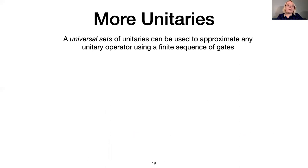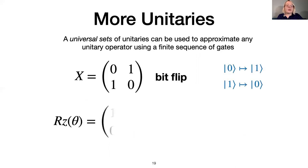In quantum computing, it is typical to fix a small set of unitary operations, from which any other unitary can be constructed. In this talk, you will see the H and CNOT operations shown previously, and the X and RZ operations shown here. Note that the RZ operation is parameterized by a real value theta.